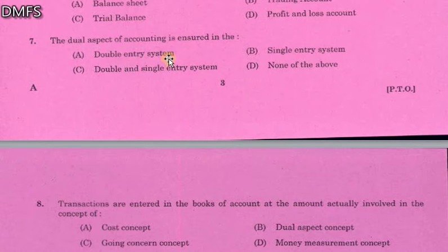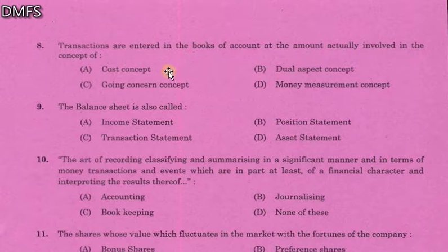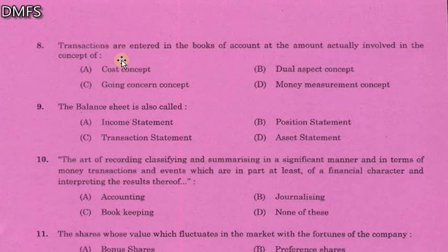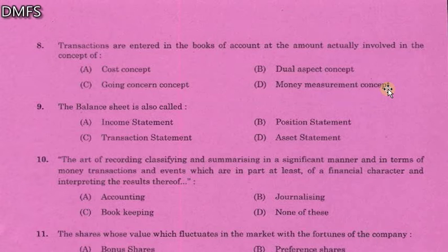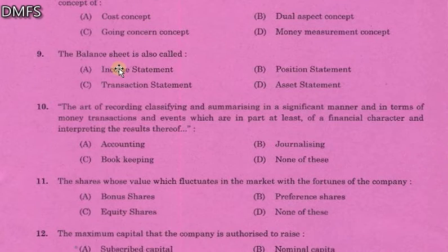The transaction entered in the books of account and the amount actually involved — that is the money measurement concept, which can be measured in value. It doesn't have to be a cost concept. The balance sheet is also called a position statement — it shows the financial position.